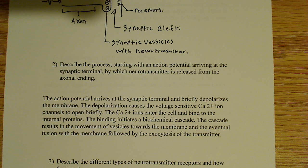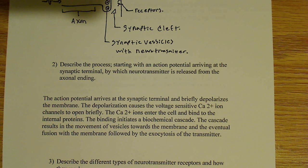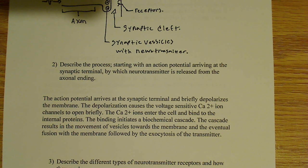You have a depolarization from an action potential, and that depolarization opens voltage-sensitive, or voltage-gated, ion channels — specifically calcium ion channels. The calcium enters the cell, it binds to these internal proteins, and what it ends up doing is initiating a biochemical cascade that results in the exocytosis of the neurotransmitter. That's how the whole process works — that's how the neurotransmitter is released.